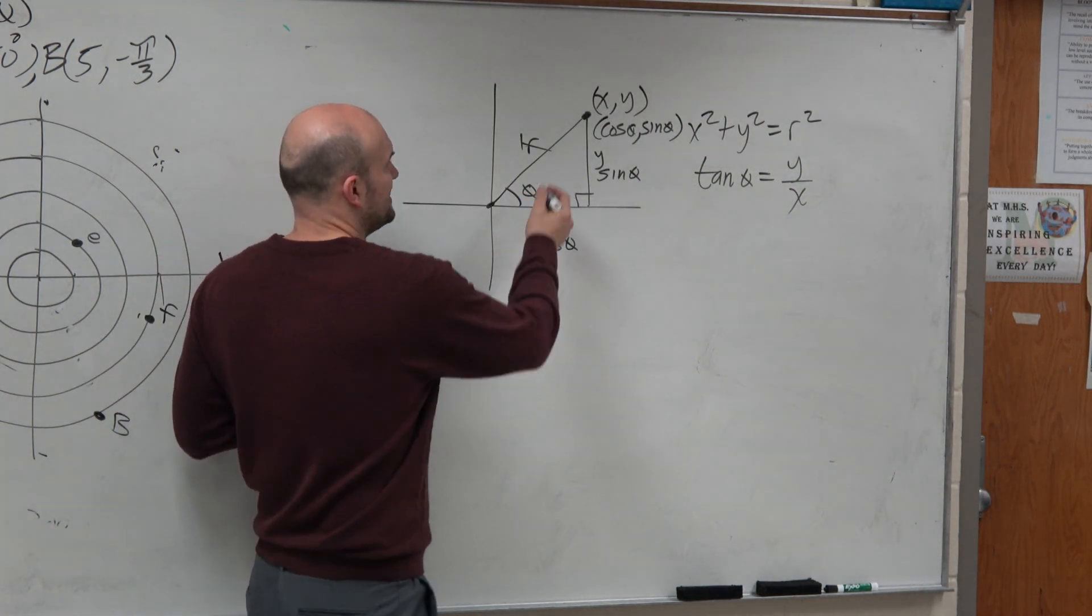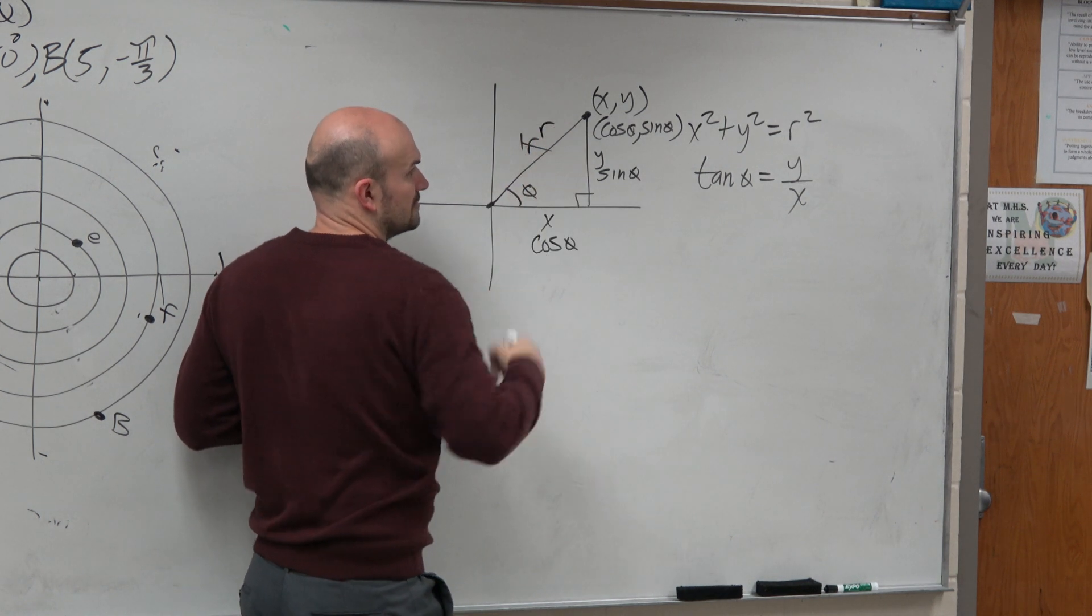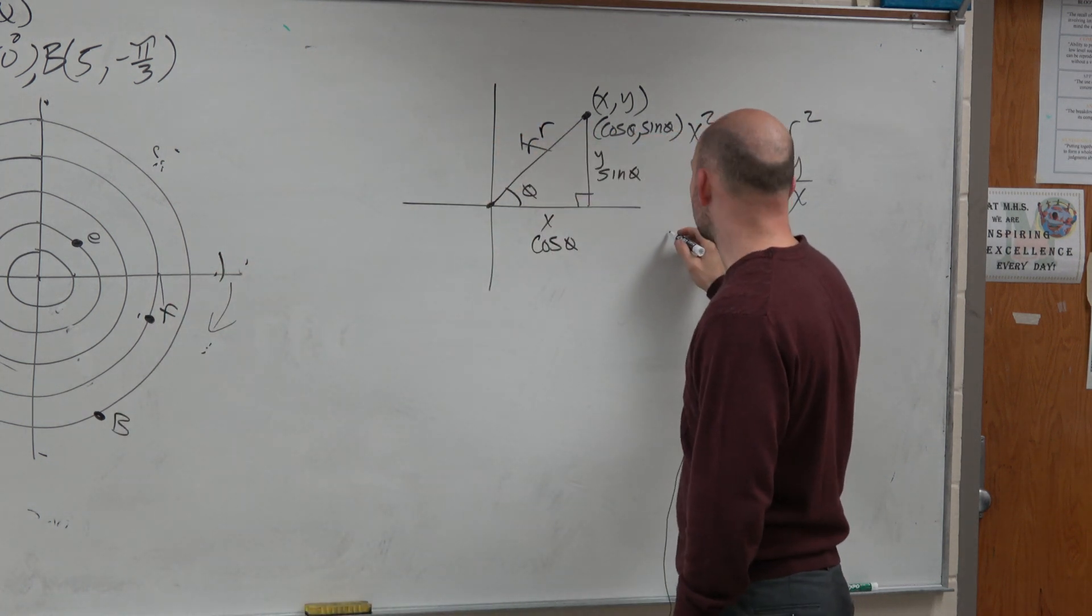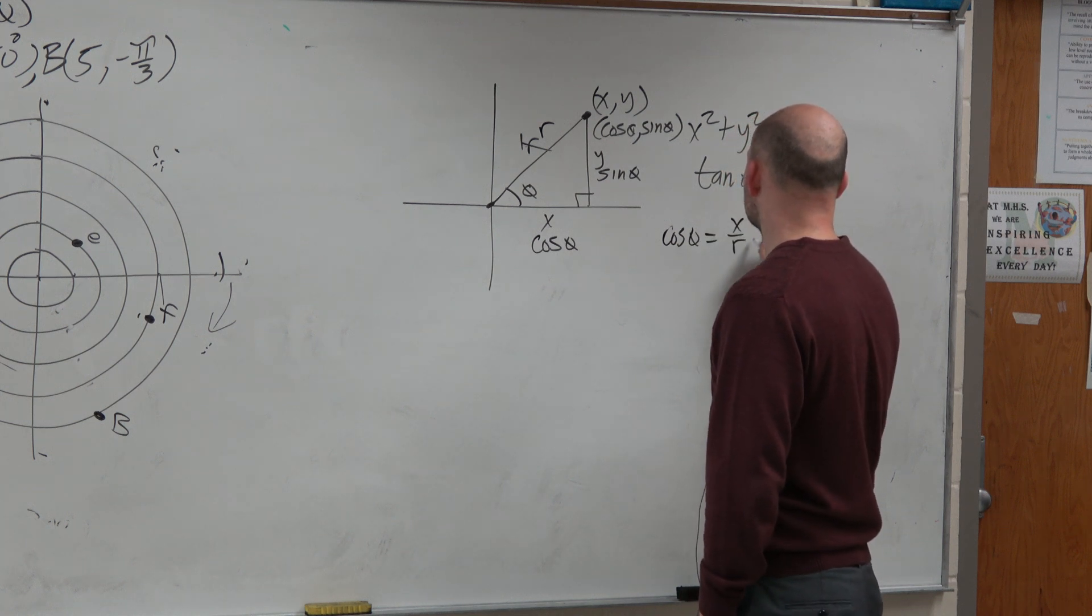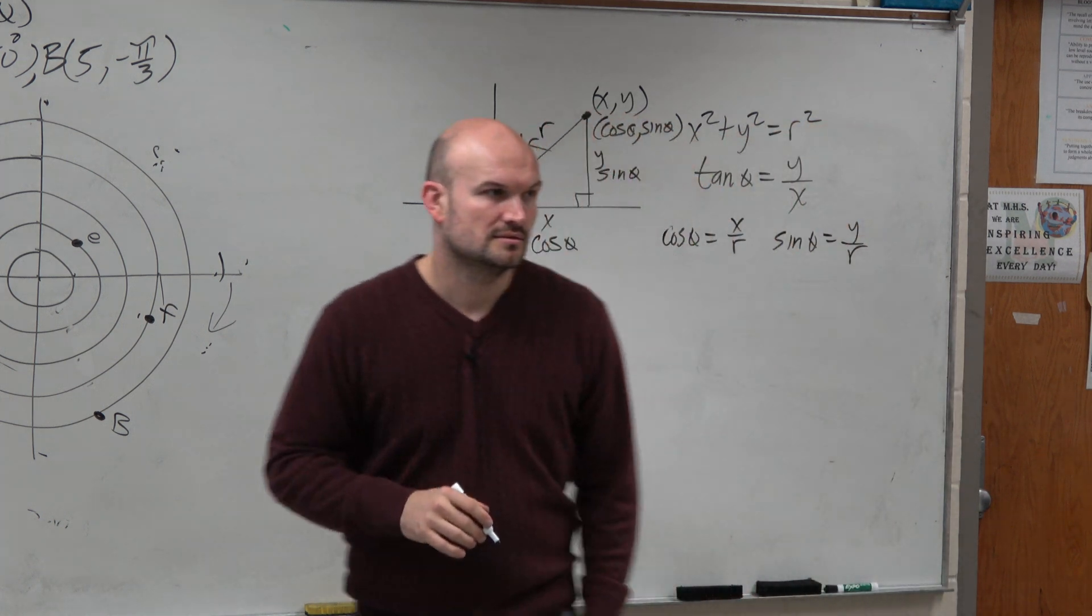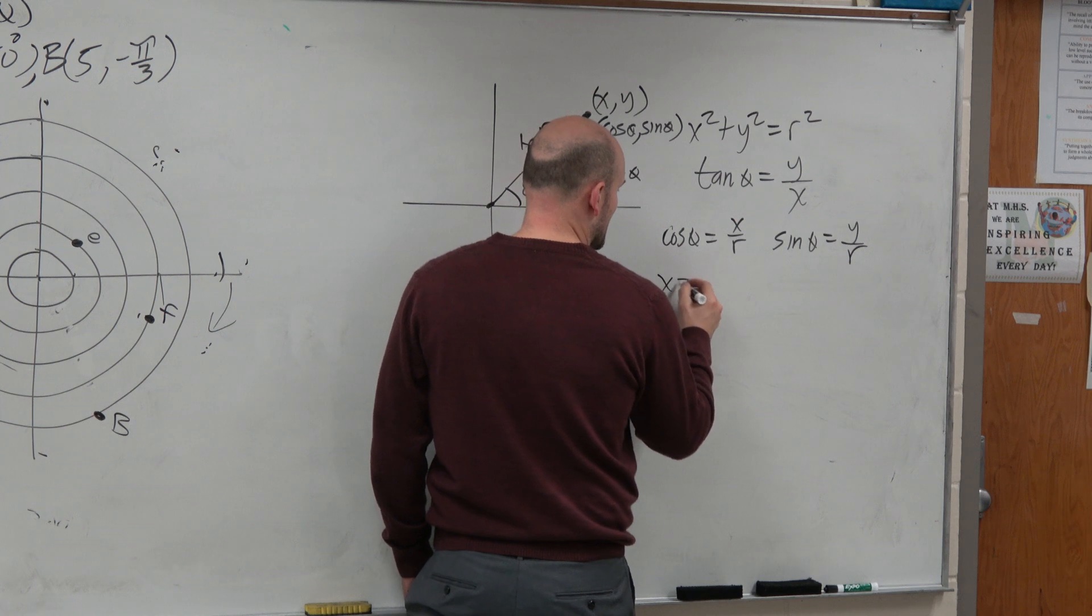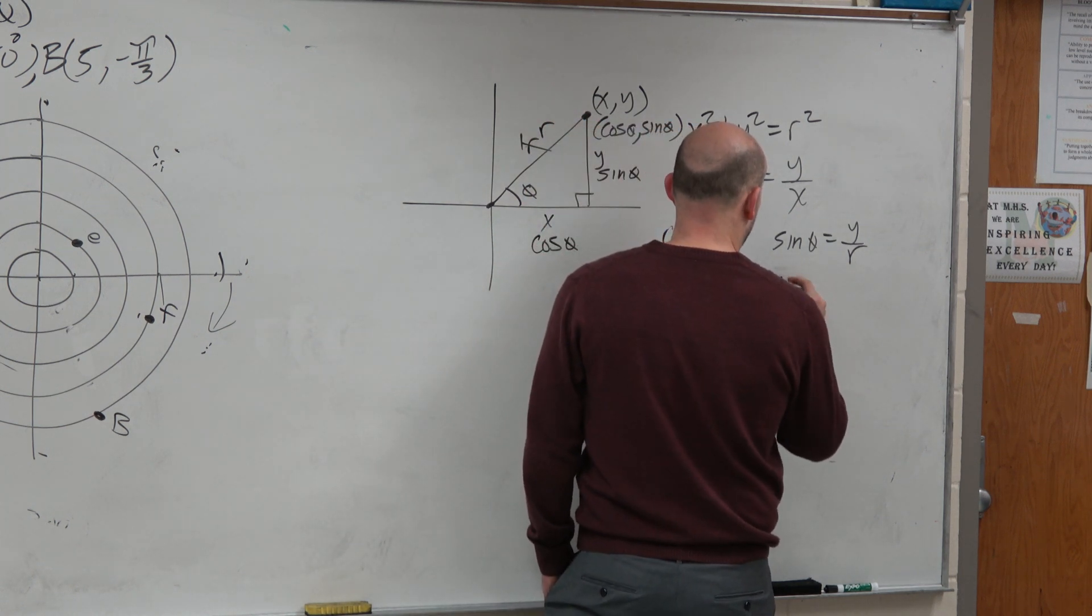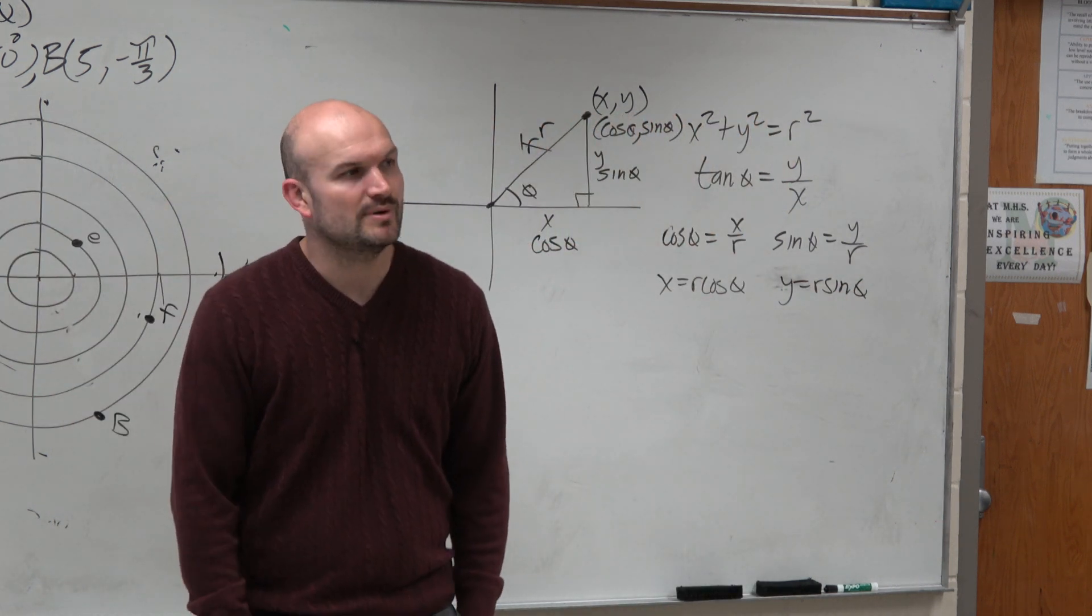Well, going back to our trigonometric ratios, cosine of theta is x over r. Sine of theta is y over r. So therefore, if you multiply by r on both sides, x equals r cosine of theta, y equals r sine of theta. And no way, those are the other two equations.